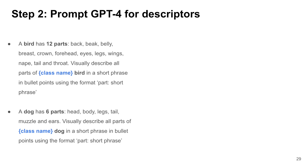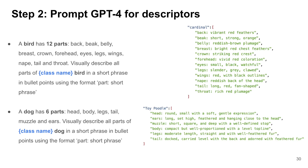In the second step, we design prompts to obtain descriptors for 11K bird species and 140 dog breeds. We especially ask for visual descriptors for better matching with image regions. The GPT-4 responses are then converted to JSON format for all classes, such as Cardinal for birds or Toy Poodle for dogs.